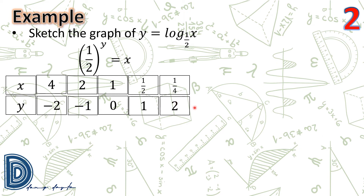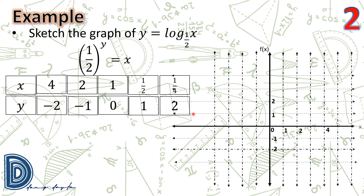We are ready to plot these points on the rectangular coordinate system. We have (4, −2), (2, −1), (1, 0), (1/2, 1), and (1/4, 2). Connect these points using a smooth curve to get the graph of y = log_(1/2)(x). All the properties of the logarithmic function of the form y = log_b(x) are satisfied by this graph.